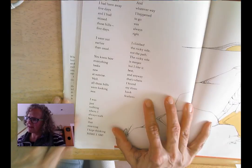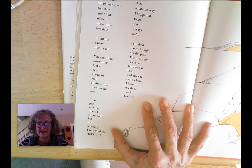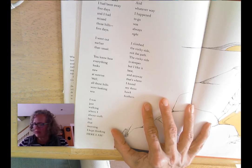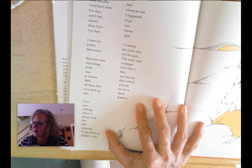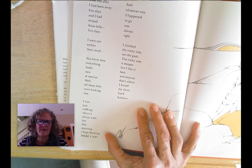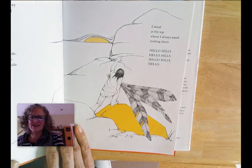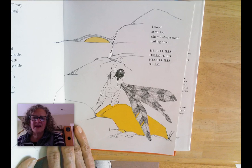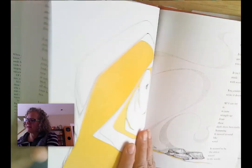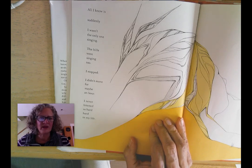That was after I had been away five days and had missed those hills. I went out earlier than usual. You know how everything looks new at sunrise? Well, all those hills were looking new. I was just walking where I always walk, but that morning I kept thinking, here I am. I climbed the rocky side — the steeper side I like best — and that's where I found my three hawk feathers. I stood at the top, singing Hello, hills. And suddenly, I wasn't the only one singing. The hills were singing too. I stopped and didn't move for maybe an hour. I never listened so hard in my life.